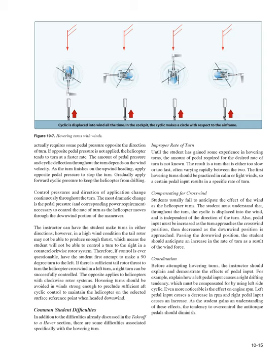Therefore, if control is ever questionable, have the student first attempt to make a 90-degree turn to the left. If there is sufficient tail rotor thrust to turn the helicopter crosswind in a left turn, a right turn can be successfully controlled. The opposite applies to helicopters with clockwise rotor systems. Hovering turns should be avoided in wind strong enough to preclude sufficient aft cyclic control to maintain the helicopter on the selected surface reference point when headed downwind.